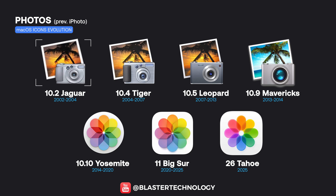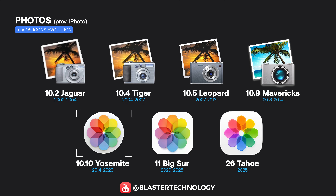The Photos icon evolved from a realistic camera and a beach photo — initially showing a sunset, then a daylight photo in the Mavericks version. Yosemite later introduced the iconic colorful flower, which was simplified and flattened with macOS Big Sur, eventually reaching the clean and vibrant Tahoe version.